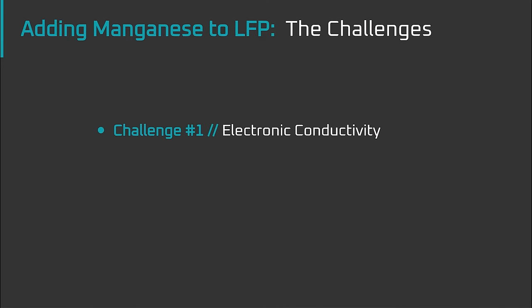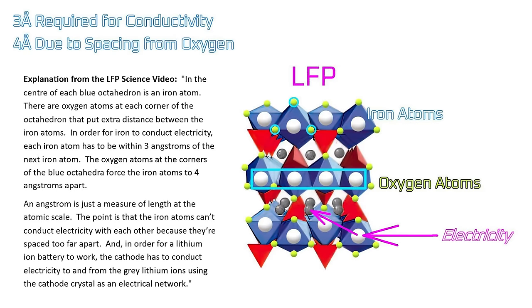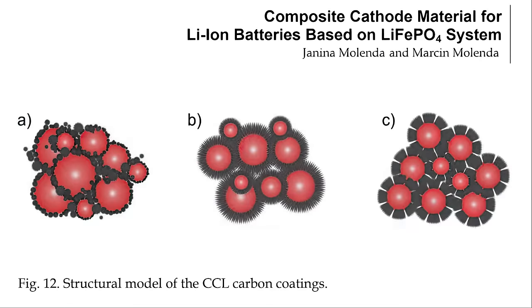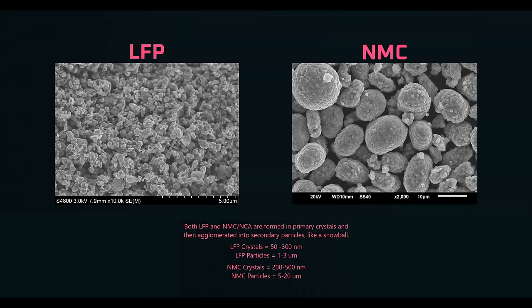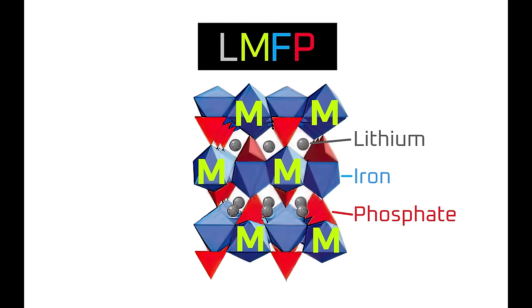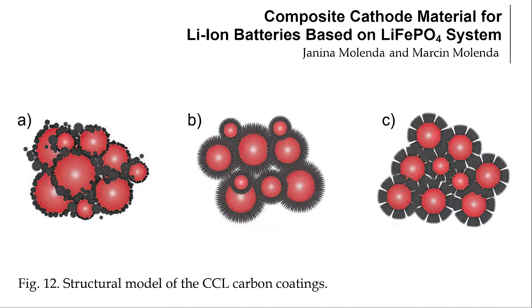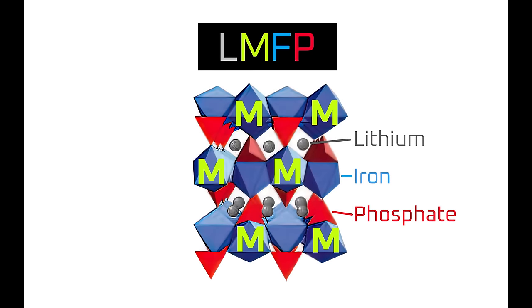Starting with electrical conductivity, as I explained in the LFP science video, LFP has poor electrical conductivity because the iron atoms in the crystal structure are too far apart to conduct electricity. The way that was solved was by adding conductive carbon coatings to the cathode particles and by making the cathode particles smaller, which reduces the distance electrons have to travel through the cathode material. Adding manganese makes the electrical conductivity even worse, and manganese is resistant to the carbon coating process. The solution is to limit the amount of manganese used in LMFP batteries.